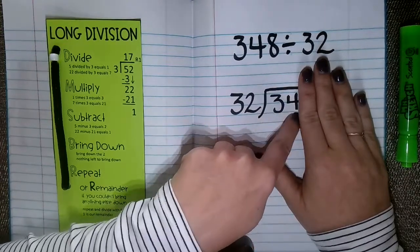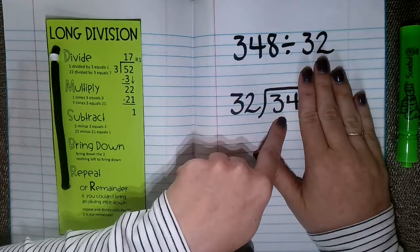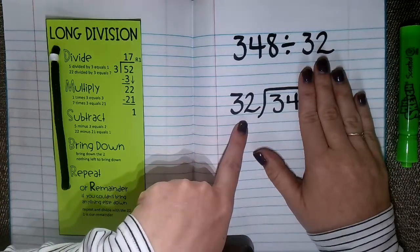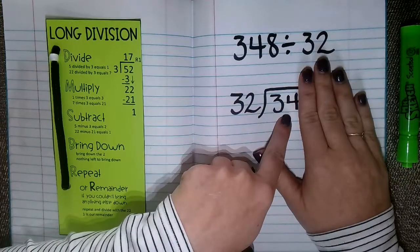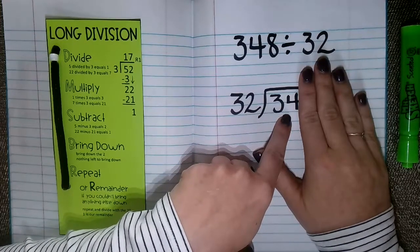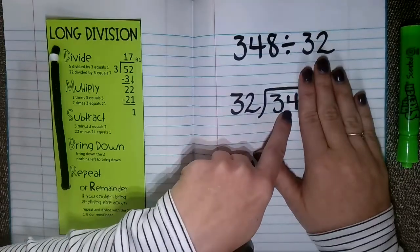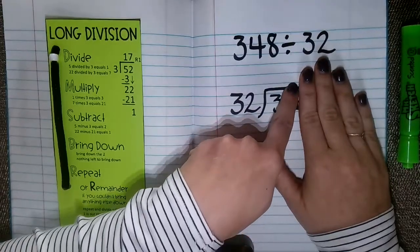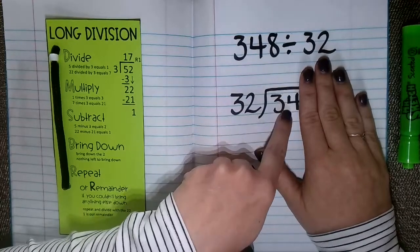And now this number that I'm looking at here is 34. So I need to ask myself, can 32 fit into 34? Yes, it can. Again, so since we said that 32 fits into 34, I need to write how many times right above that 4. I want to make sure that those place values line up.